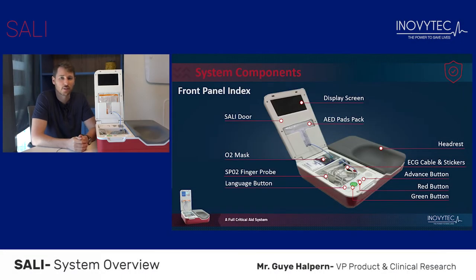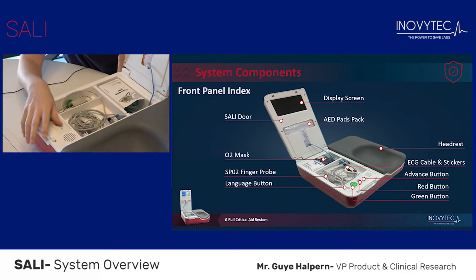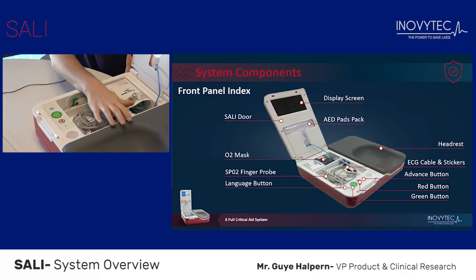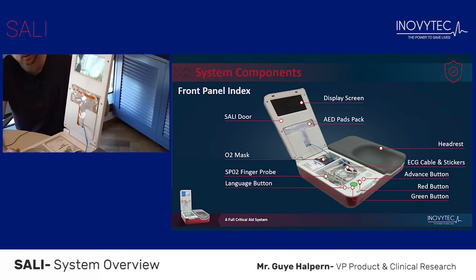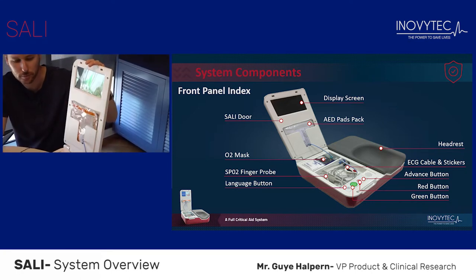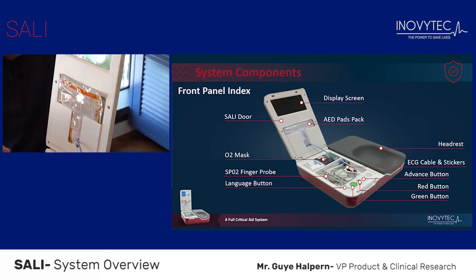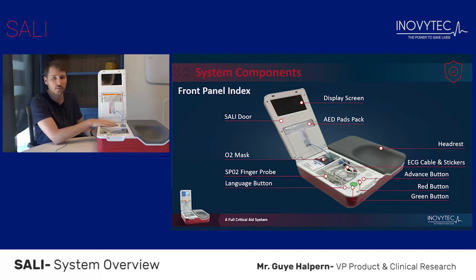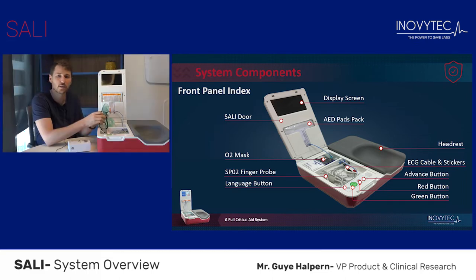SALI is comprised of the following components. The first is the headrest, which will manage the patient's airway non-invasively. Next is the display screen. Here you will find the AED pads. This is the oxygen mask, from which the oxygen flow will go to the patient. Inside the oxygen mask, there is a pressure gauge that will monitor the patient's breath rate.